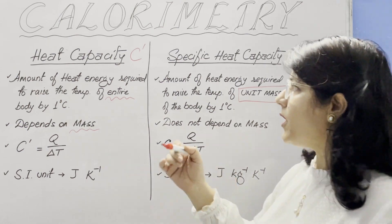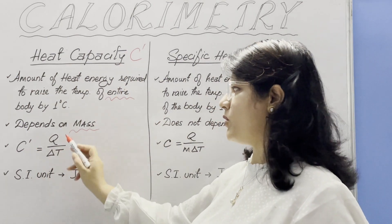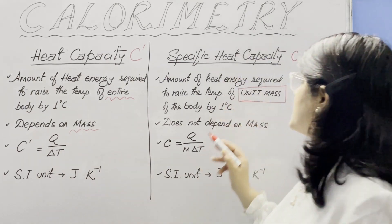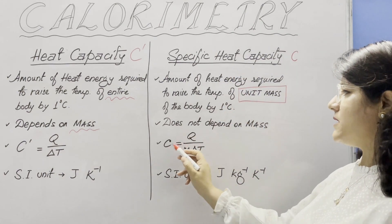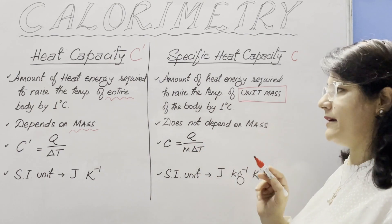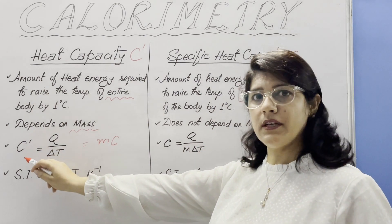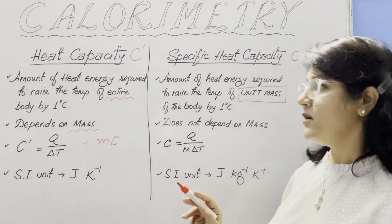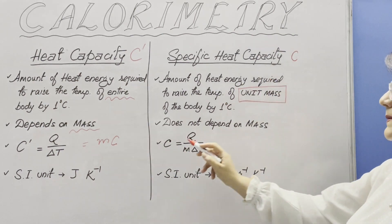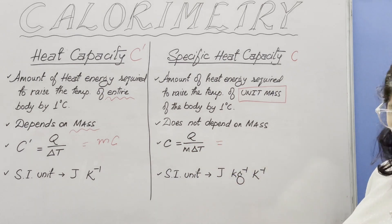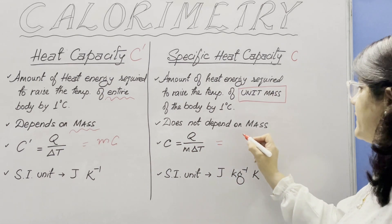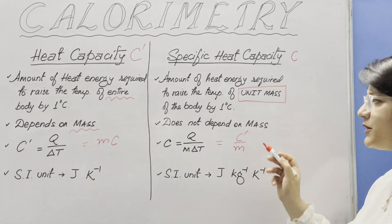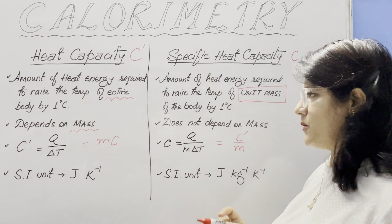The formula for heat capacity is C′ = Q / ΔT. Specific heat capacity formula is c = Q / (MΔT). So heat capacity (thermal capacity) equals the product of mass and specific heat capacity c, whereas specific heat capacity c equals thermal capacity divided by mass.